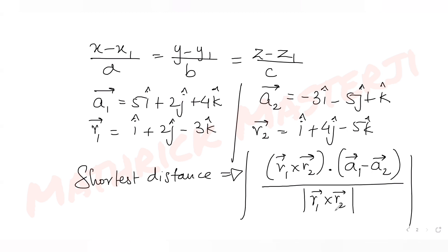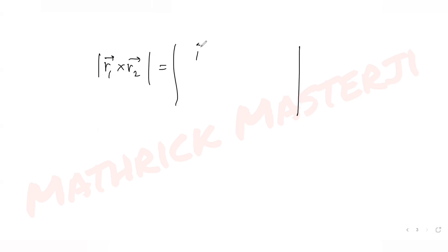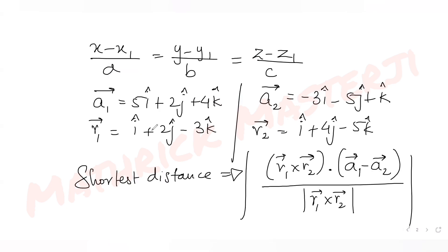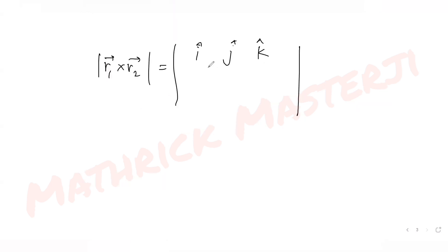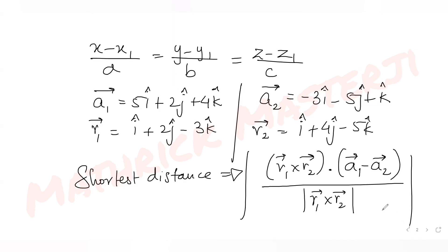First, let's find the cross product r1 × r2. Whenever I have to find the cross product of two vectors, it is given by the determinant with i, j, k in the first row, coefficients of r1 — that is 1, 2, −3 — in the second row, and coefficients of r2 — that is 1, 4, −5 — in the third row.